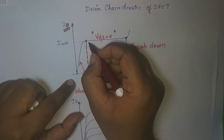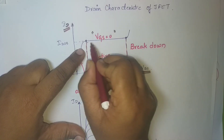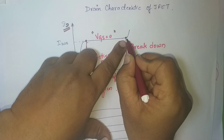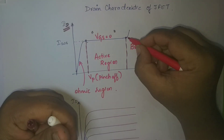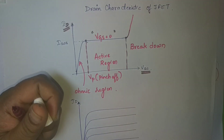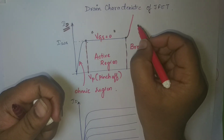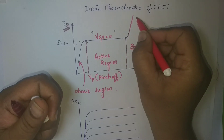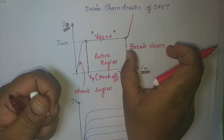At initial stages the current varies linearly, then it reaches a constant value, and then it suddenly starts increasing abruptly to a very large value — the current goes very high. This is called the breakdown region. This current is called the breakdown current, and this is the breakdown region. Normally, we do not operate the device in the breakdown region.